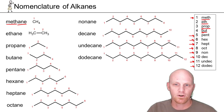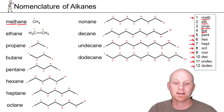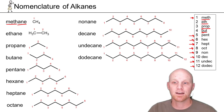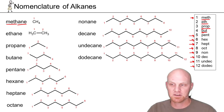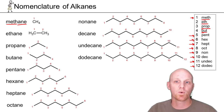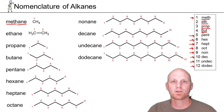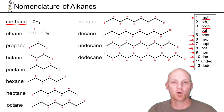Our first 12 alkanes are: methane, ethane, propane, butane, pentane, hexane, heptane, octane, nonane, decane, undecane, dodecane. You need to get those 12 down quickly, because those are just the base names — the rules are going to make this more complex in a hurry.